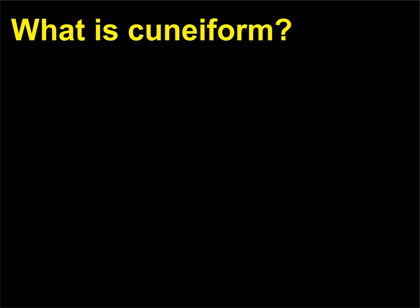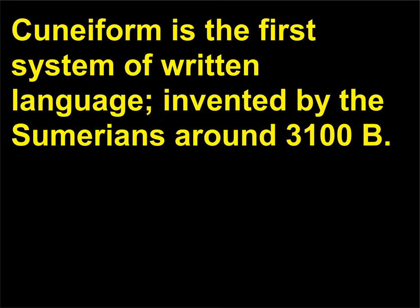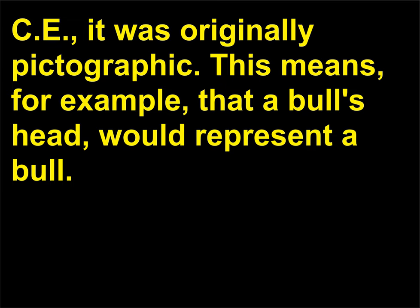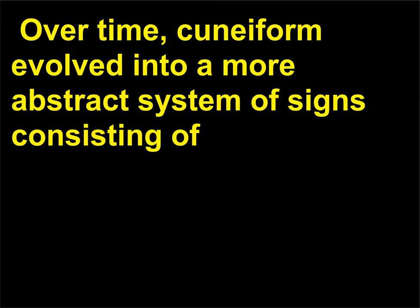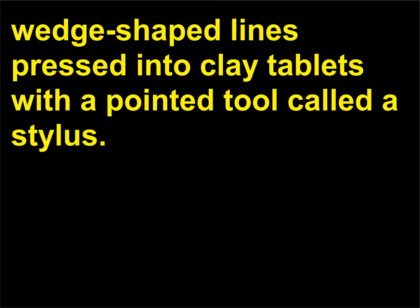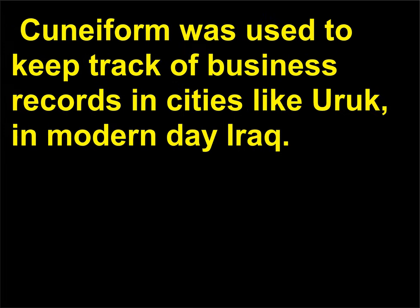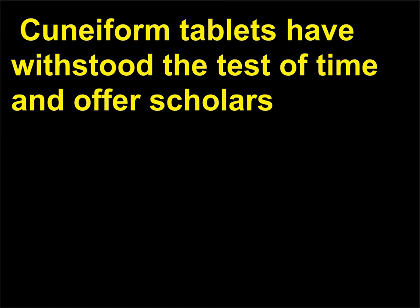What is cuneiform? Cuneiform is the first system of written language, invented by the Sumerians around 3100 BCE. It was originally pictographic — meaning, for example, that a bull's head would represent a bull. Over time, cuneiform evolved into a more abstract system of signs consisting of wedge-shaped lines pressed into clay tablets with a pointed tool called a stylus. Cuneiform was used to keep track of business records in cities like Uruk. Cuneiform tablets have withstood the test of time and offer scholars a wonderful window into the culture of the ancient Near East.